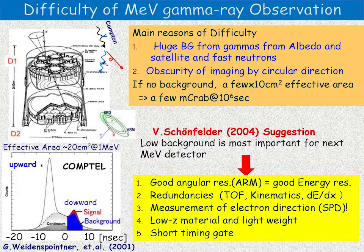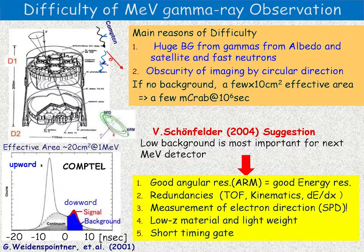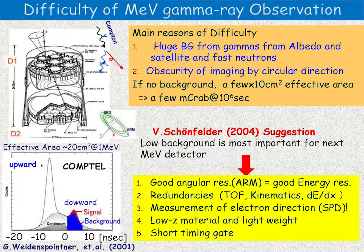COMPTEL has additional tools, such as time-of-flight between the forward and backward detectors. Using this information, the COMPTEL group separates background gamma rays and neutron particles, as shown by the time-of-flight spectrum. Downgoing particles from the albedo or satellite are quite huge. Even after cuts for upgoing and downgoing signals, there is still about 90% background remaining.